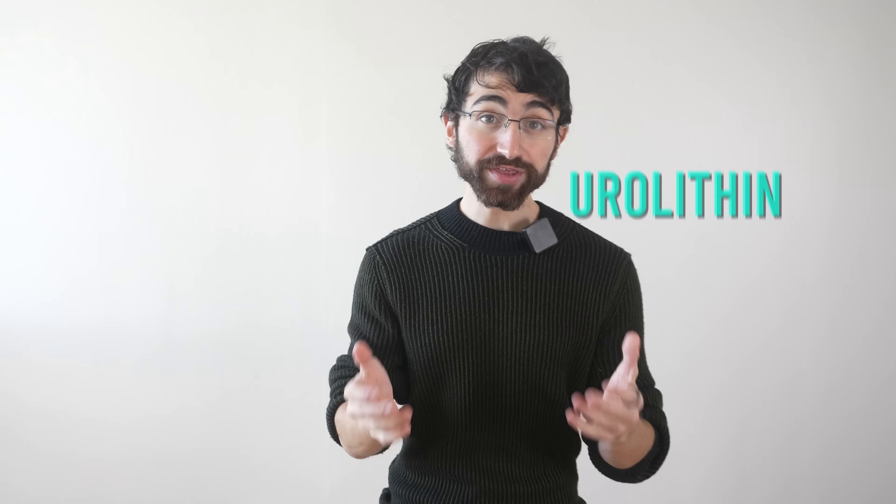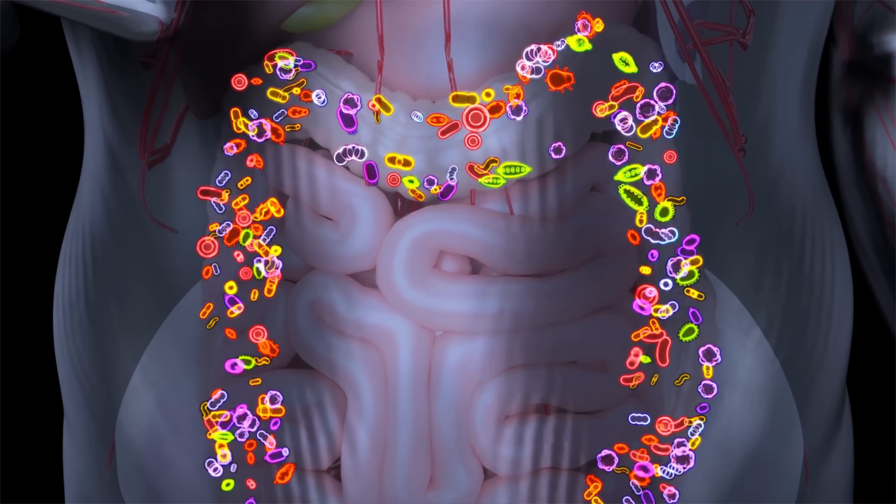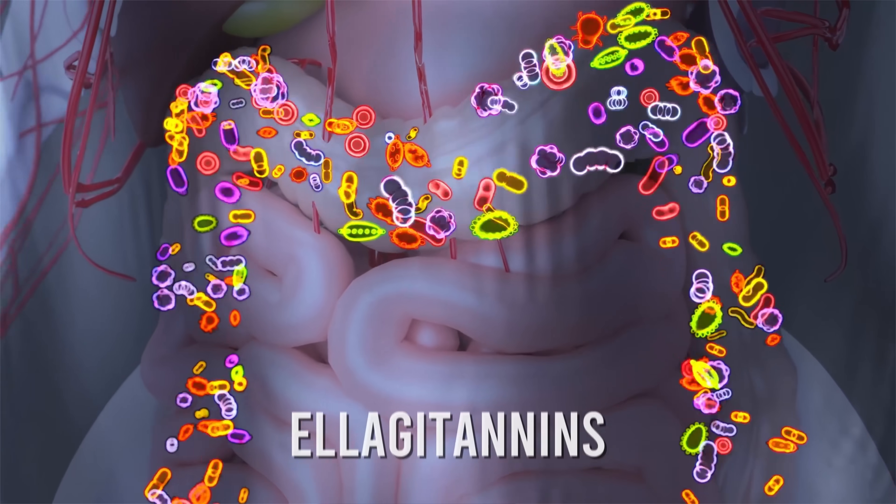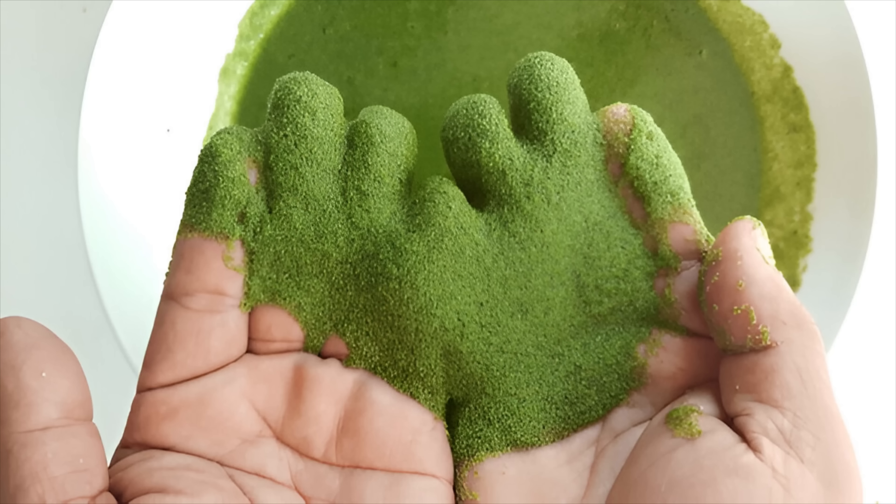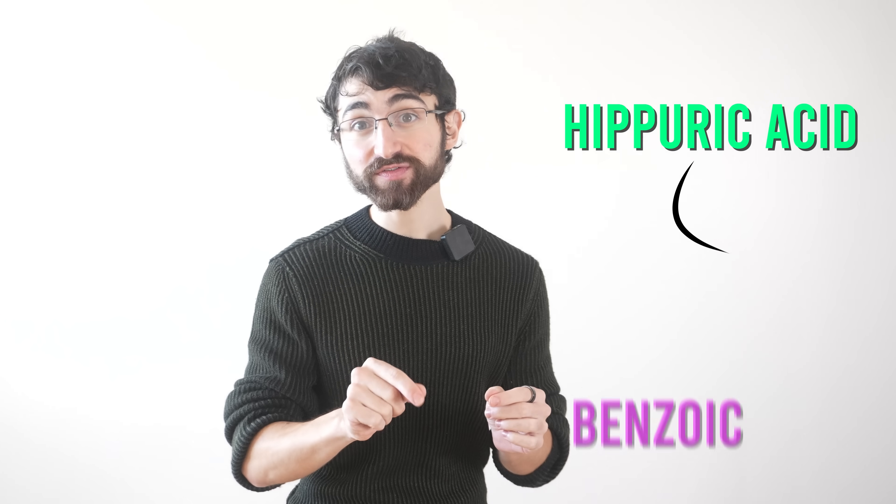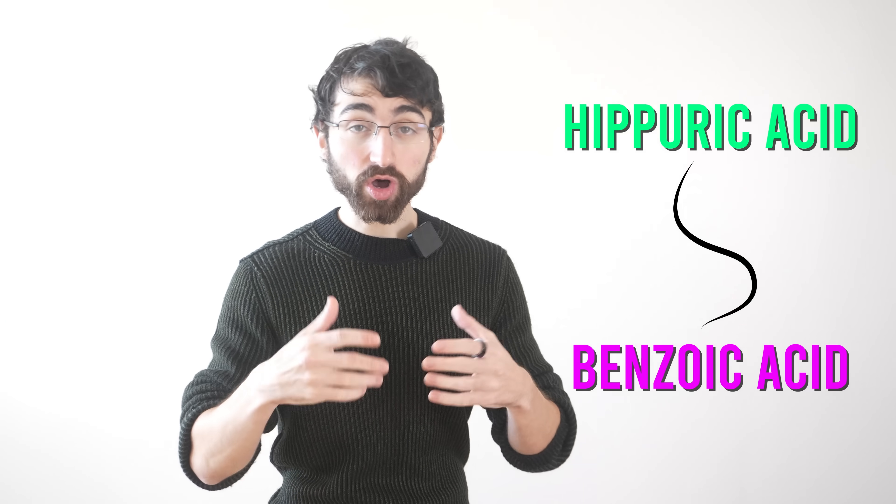But it gets more complicated too, because while these compounds can be found in some foods, they're largely microbiome-produced metabolites. So urolithin A is made by gut microbes from precursors called ellagitannins, which in fact is found in green tea, Wolfia globosa, and walnuts. And hippuric acid is a glycine derivative of benzoic acid and is also made by gut bacteria and is associated with more microbiome diversity.